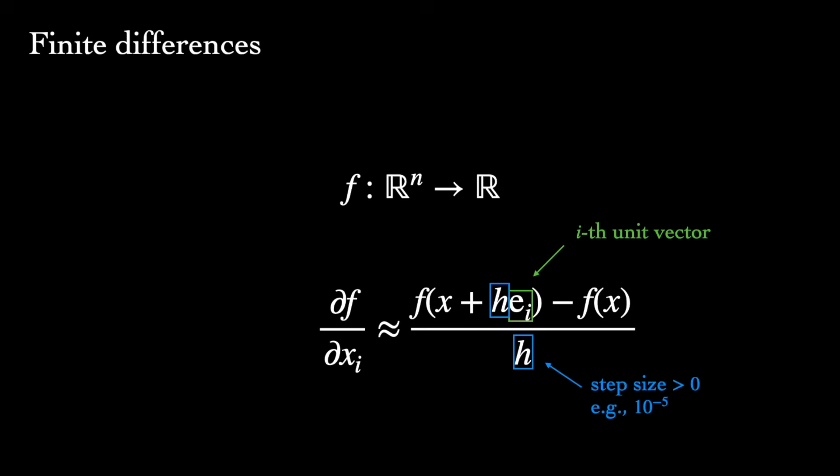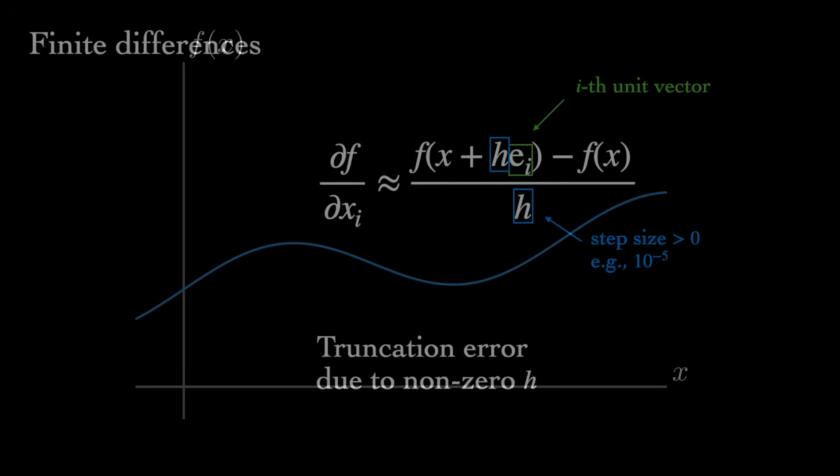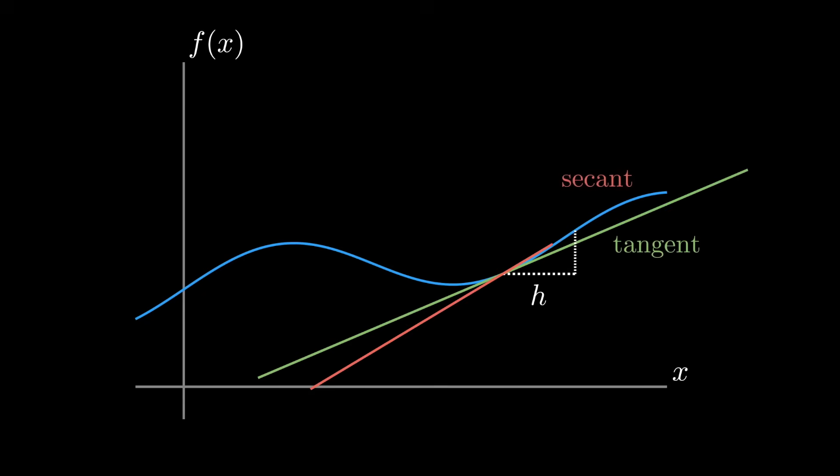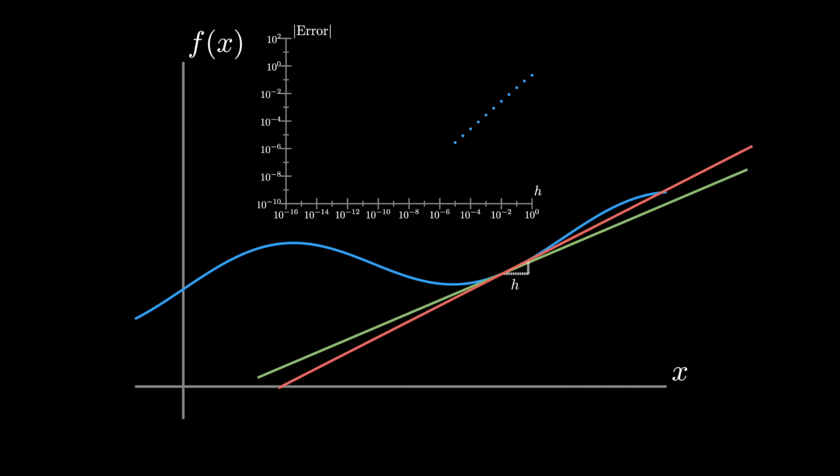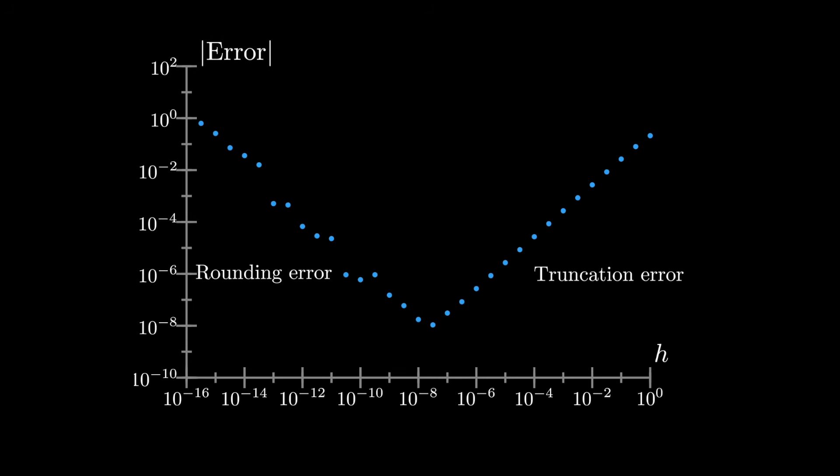So while this can be fairly simple to implement, some issues come up with accuracy and numerical stability. One issue is truncation error. We're trying to approximate a limit as h goes to zero, but we're using some non-zero h. What we're really calculating is the slope of a secant line near the tangent line at x. As h gets closer to zero, and the secant line approaches the tangent line, the truncation error decreases. But this eventually leads to what's called rounding error due to the limited precision of floating-point arithmetic. So we have to carefully consider this trade-off between truncation and rounding error when selecting a step size.